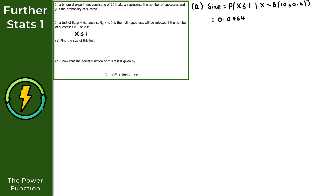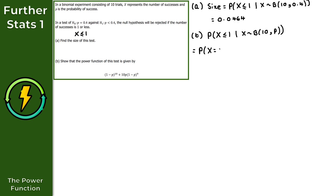For part B, we need to show that the power function is given by the stated expression. We take P(X ≤ 1) but now replace 0.4 with the unknown parameter p — that's the whole point of the power function. So we need P(X ≤ 1) given X follows a binomial distribution with parameters 10 and p, which equals P(X=0) + P(X=1).